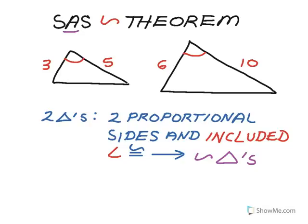In this example, I have a side that is 3. Looking at the proportion with the side that's 6 in the other triangle, that is the same ratio as the side that's 5 in the smaller triangle to the side that's 10. It's a 1 to 2 ratio or 1 to 2 scale factor. So with those sides proportional and the included angle at the top congruent, I have similar triangles by side-angle-side — proportional sides with the included angles congruent.